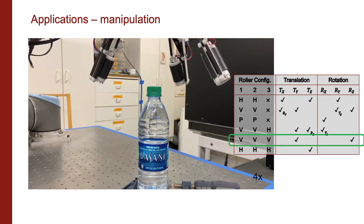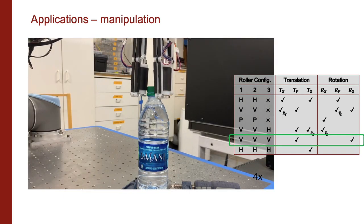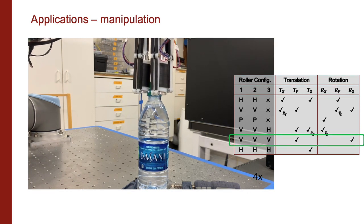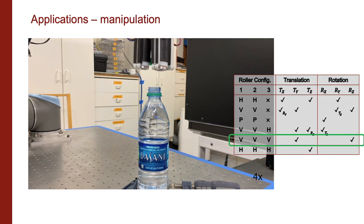One of the major benefits of the roller grasper is that it simplifies the control by avoiding gating when the manipulation requires continuous rotation, for example, turning out a bottle cap.